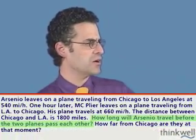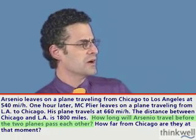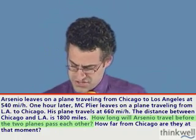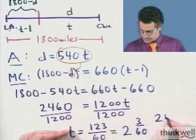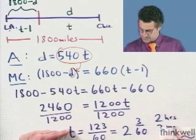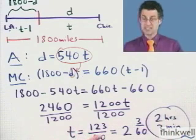And so the answer is, the first question was, how long will it take Arsenio to travel before the two planes reach each other? It's going to be 2 hours, 3 minutes. So that's the answer to the first part.